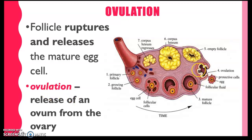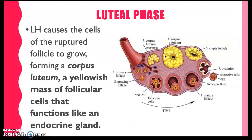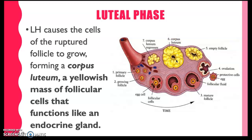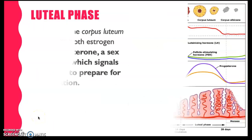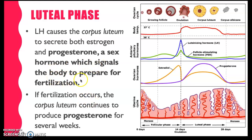What happens to the follicular cells that were left inside the ovary? These follicular cells become what we call the corpus luteum, or the yellow body, which leads us to the next phase known as the luteal phase. The luteal phase is when the anterior pituitary produces high levels of luteinizing hormone, which causes the ruptured follicle to grow to become the corpus luteum. When there are high levels of luteinizing hormone, the corpus luteum acts as an endocrine gland — remember, the ovary is an endocrine gland — so the corpus luteum produces its own hormone known as progesterone. High levels of progesterone signal the body to prepare for fertilization.